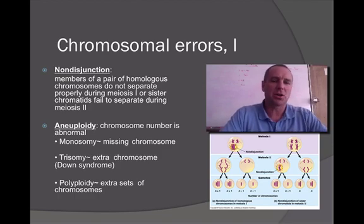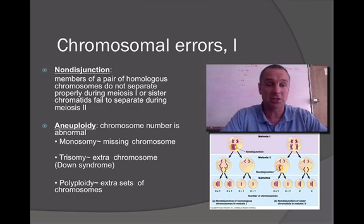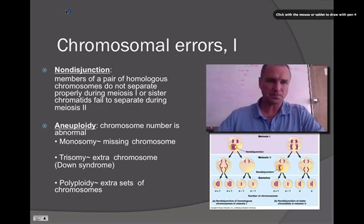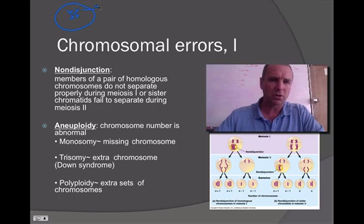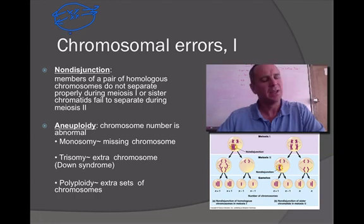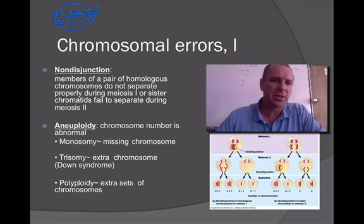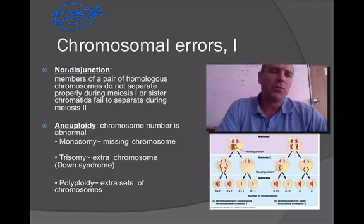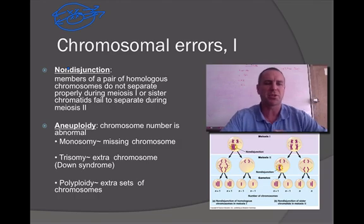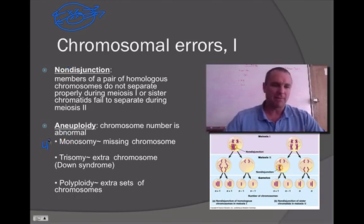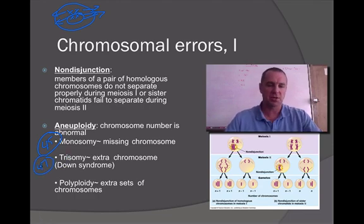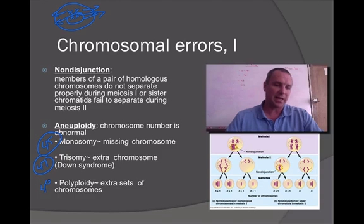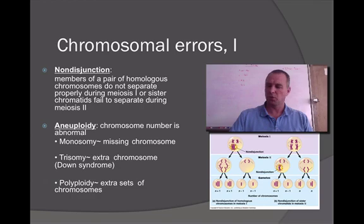Sometimes errors occur during genetics. Non-disjunction usually happens when chromosomes line up down the middle and instead of one chromosome going each way, both go the same way, leaving you with abnormal numbers of chromosomes in the cells produced — called aneuploidy. Monosomy means a cell is missing one chromosome, which for humans would be 45 chromosomes instead of 46. Trisomy means one too many — 47 chromosomes, like in Down Syndrome. Polyploidy would mean an extra entire set of chromosomes, so like 48.